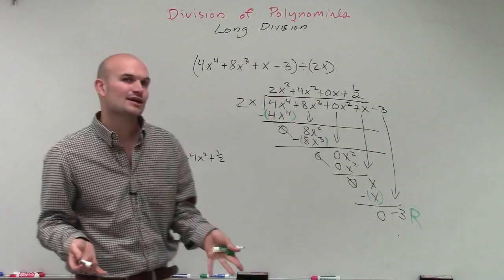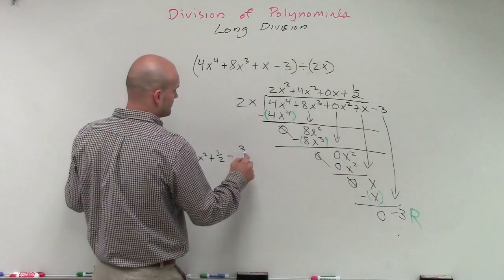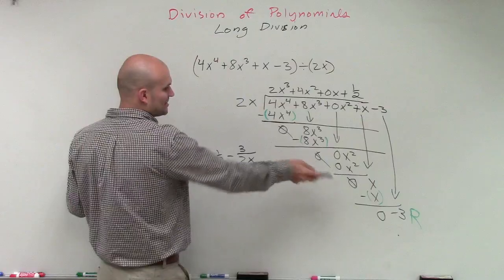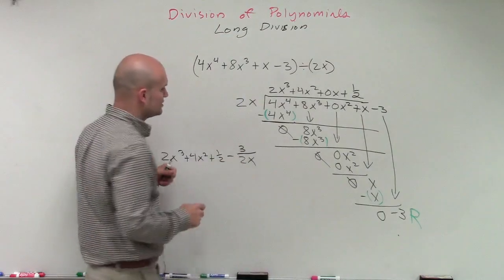And then rather than writing like a remainder, our negative 3, we're going to write our remainder divided by our divisor. And I'm saying minus 3 because it's a negative 3 is our remainder. So it's minus 3 divided by our divisor.